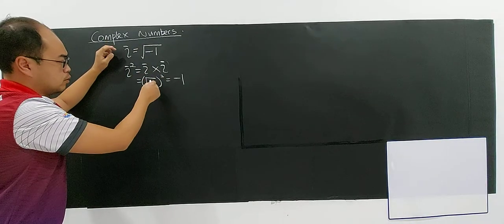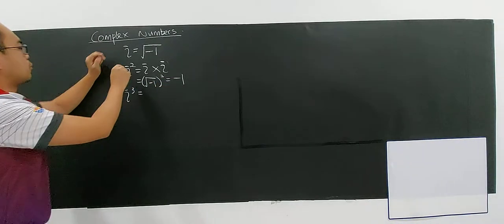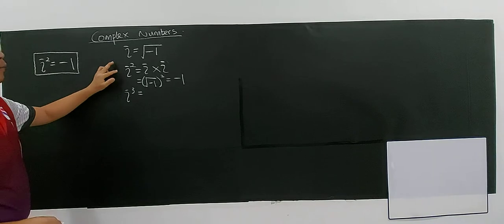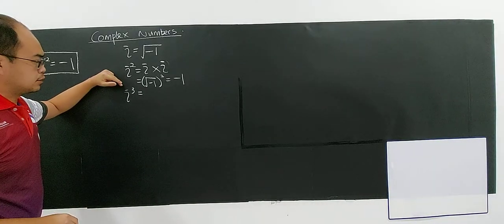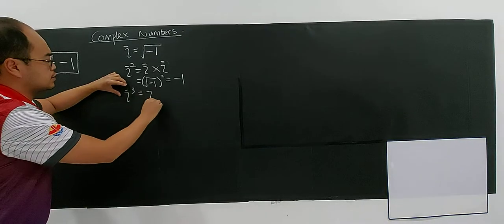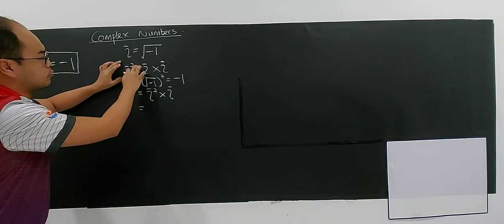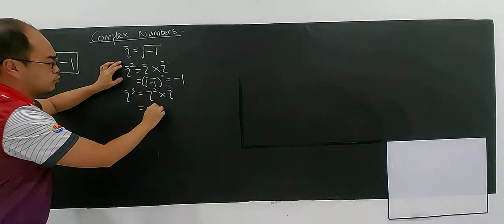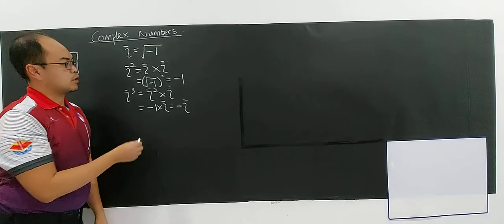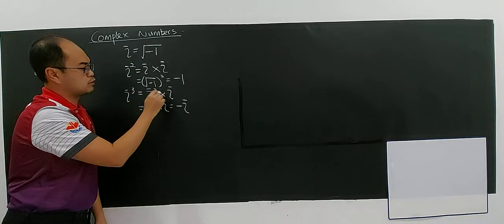The square root will be eliminated by the square and you get negative one. So i squared equals negative one. For i cubed — this is the most important one — i squared is negative one. To derive i³: i power three is the same as i power two multiplied with i. i power two is negative one, so negative one multiplied with i gives you negative i.